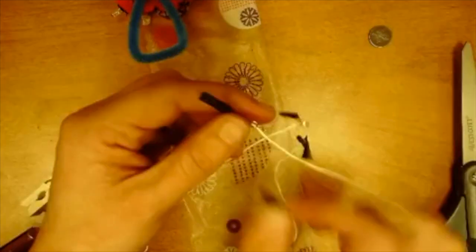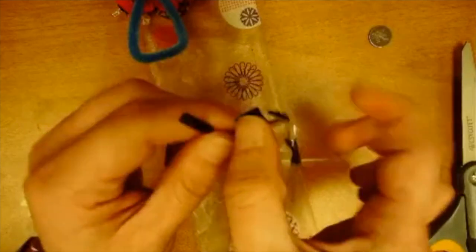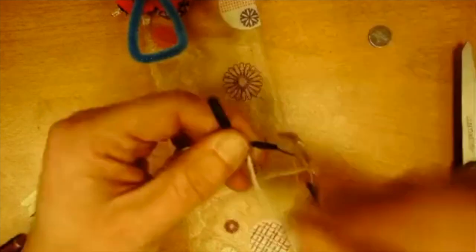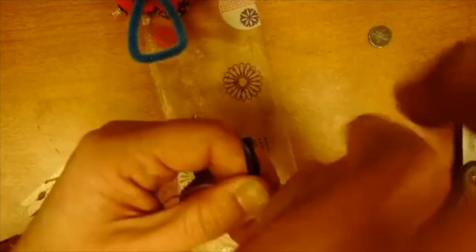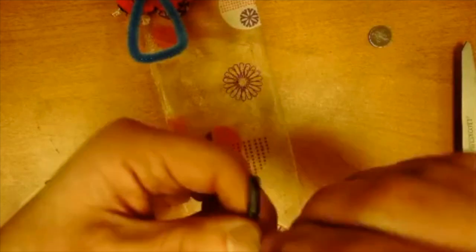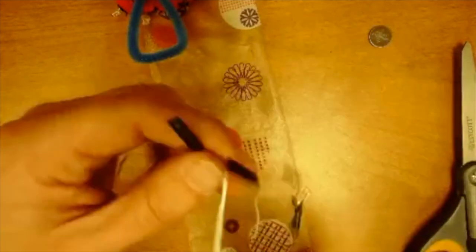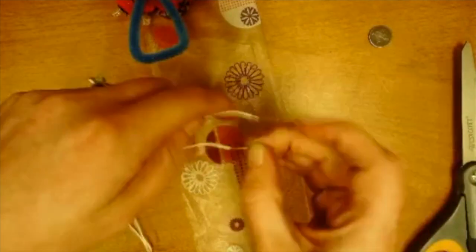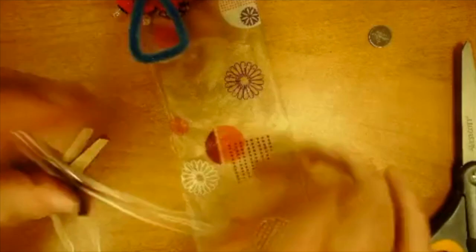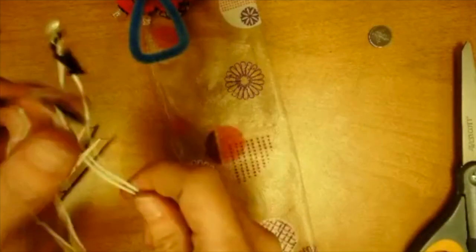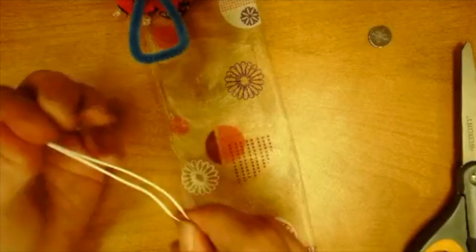So this will be a parallel circuit because each LED will have its own path to electricity. Again, a little bit of electrical tape to secure that. Make sure it doesn't poke me. I'm going to take my negative lead and go ahead and twist those together right down here.